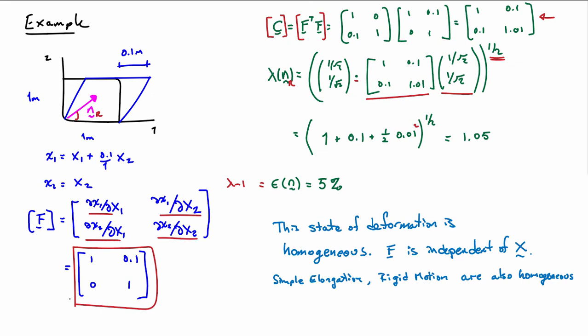Other homogeneous deformations are simple elongation and rigid motion. Those are both homogeneous. A case that I've given you before that's not homogeneous is the case of bending. So the bending deformation, the Timoshenko bending kinematics I gave you, they do not lead to homogeneous deformations. So that one is non-homogeneous or inhomogeneous.